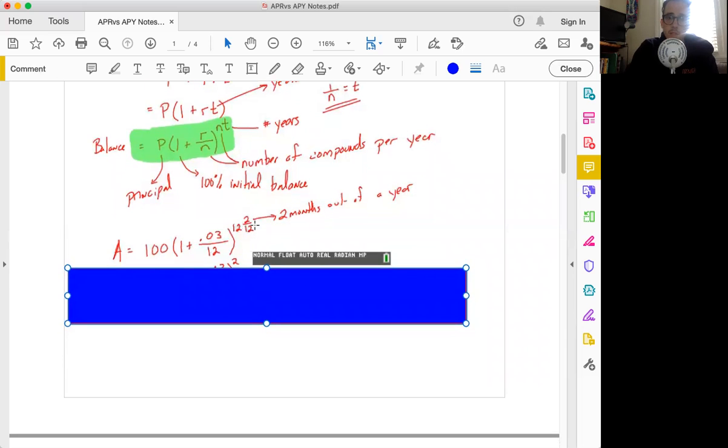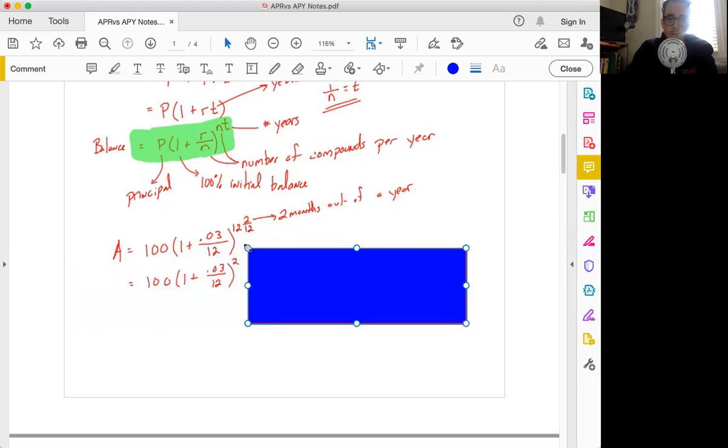We can then simplify this a little bit here, because we're saying that we want 12 compounds in the year. And this is going to happen two months out of the year, because we're seeing this happen twice. Well, I don't know. If we were to compute all of this, what do you think this is going to end up as? Is this going to be any different than what we saw before in the example?